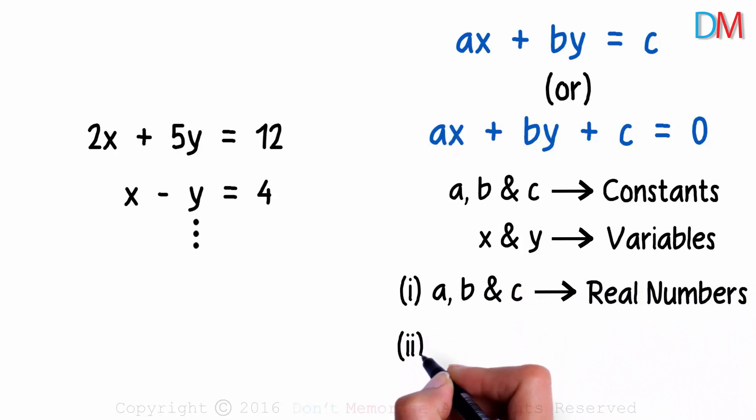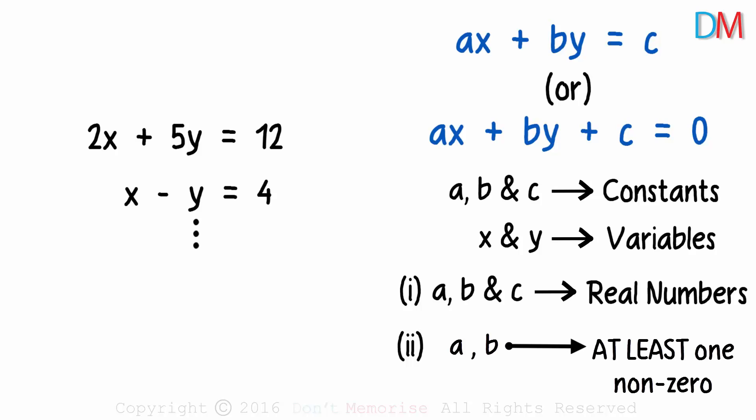And the second condition is interesting and I want you to listen to it carefully. Both a and b cannot be zero together. Yes! It means at least one has to be non-zero.